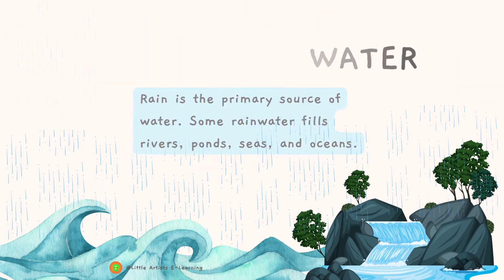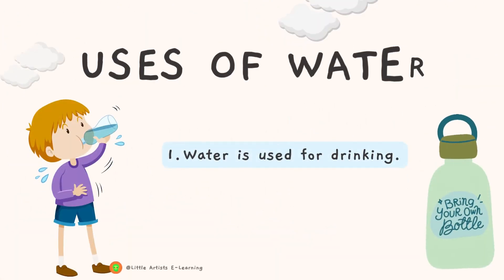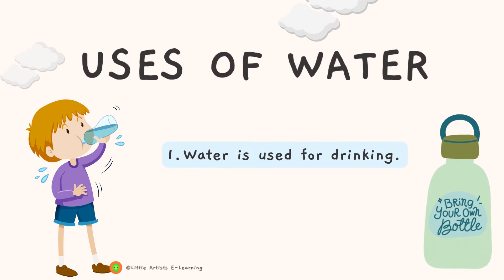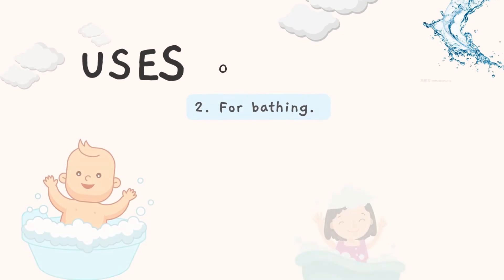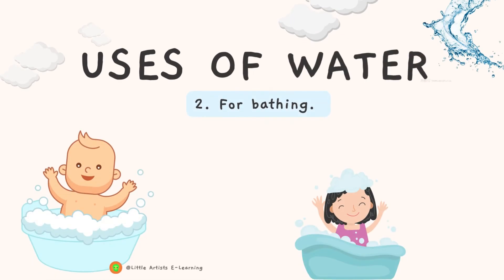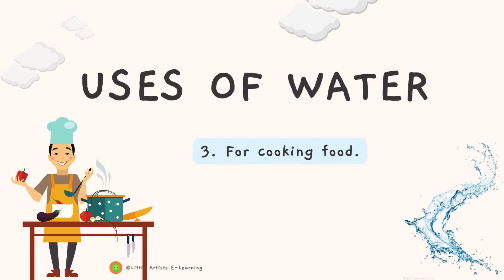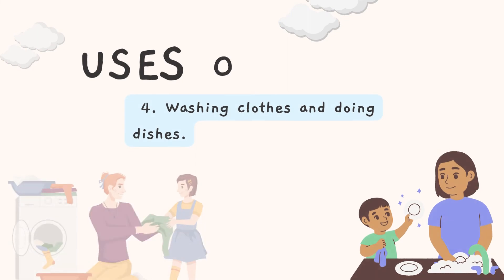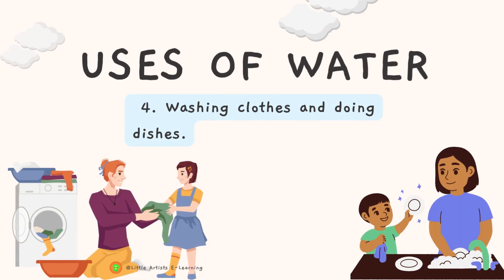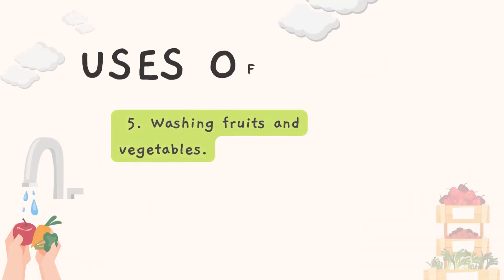Uses of water: number one, water is used for drinking; number two, water is used for bathing; number three, water is used for cooking food; number four, washing clothes and doing dishes; number five, washing fruits and vegetables.